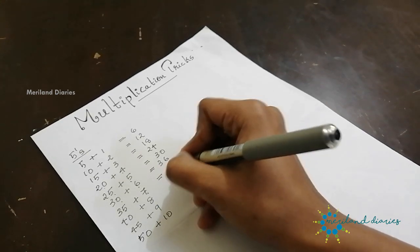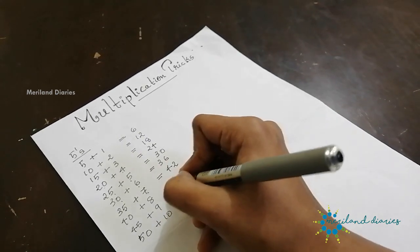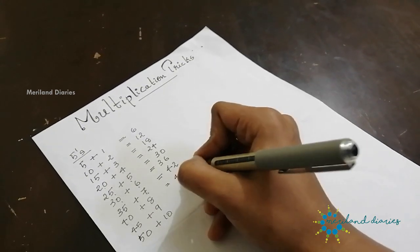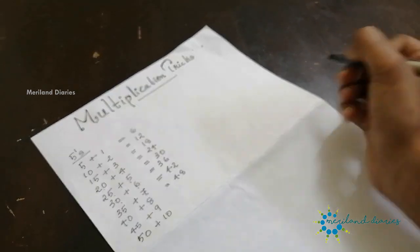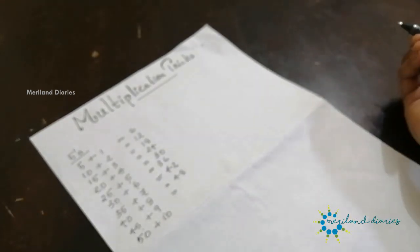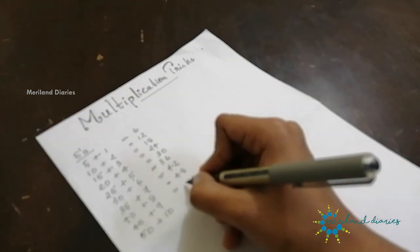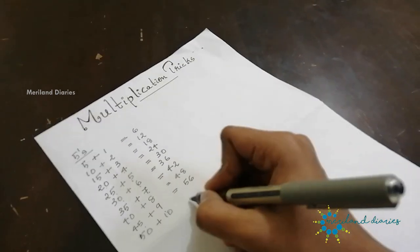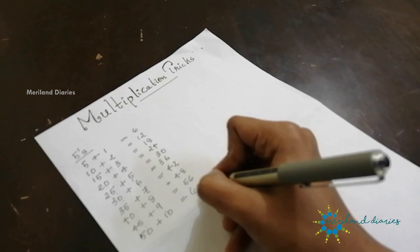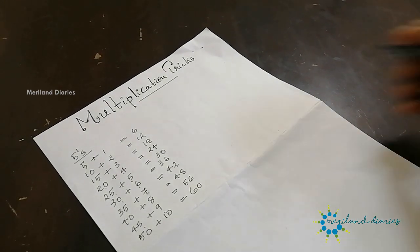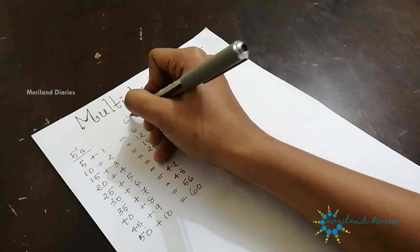Then 25 plus 5 equals 30, then 30 plus 6 equals 36, then 35 plus 7 equals 42, 40 plus 8 equals 48, 45 plus 9 equals 54, then 50 plus 10 equals 60. So now this is the 6 times table.